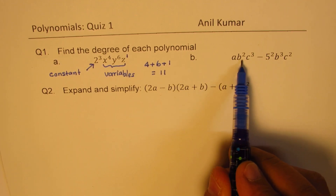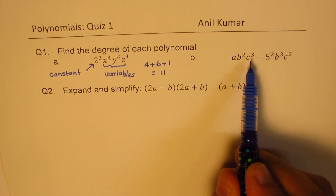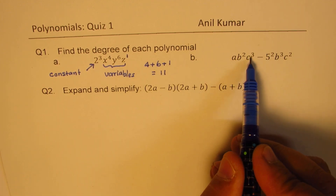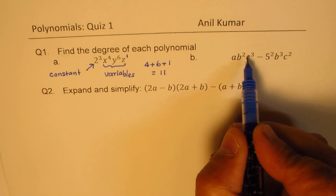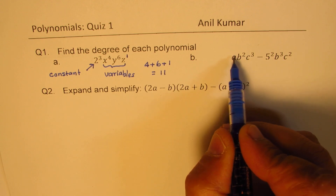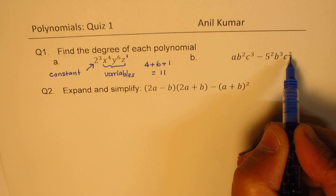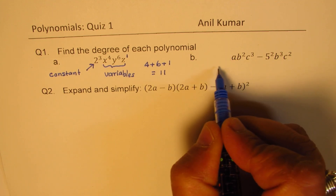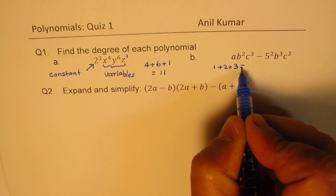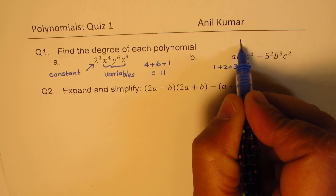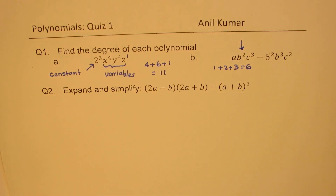The second is a binomial — we have two terms here. We have to count the degree of each term, and the highest will form the degree of the polynomial. So here, the degree of the first term is five plus one, which is six. For the second term, it is three plus two, which is five. So the answer will be six, which corresponds to the first term — that is the degree of your polynomial.